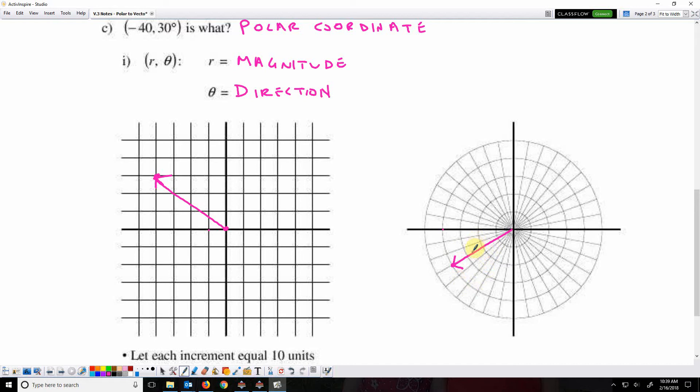It's got a magnitude of 40, and negative 30 degrees is the direction. So that one was found by graphing negative 40, 30 degrees.